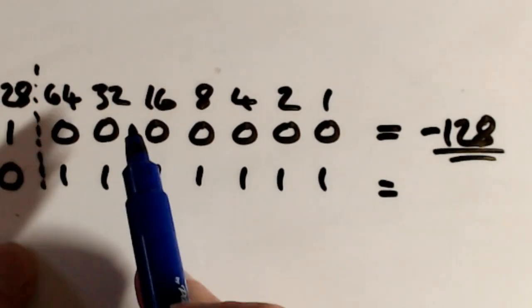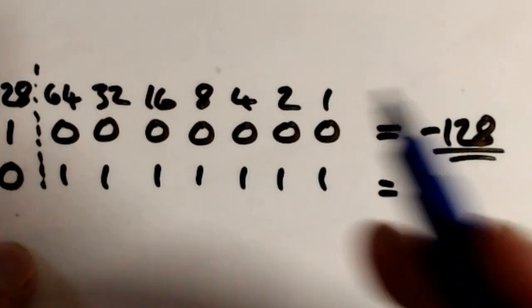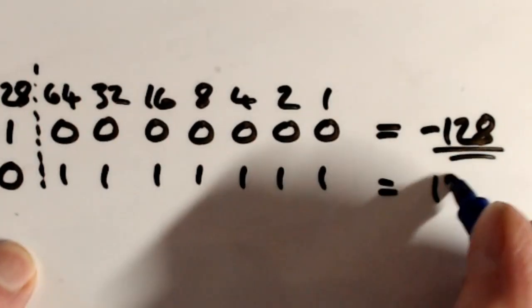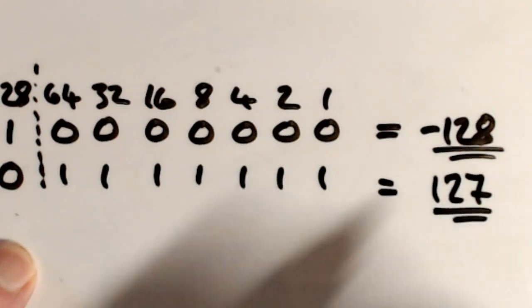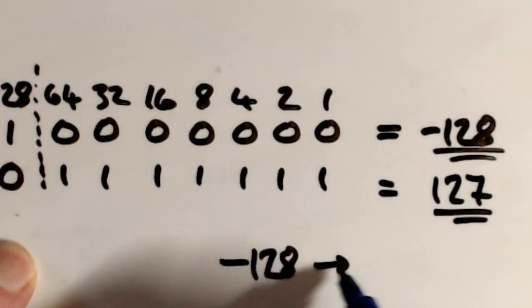If you add up 64, 32, 16, 8, 4, 2, and 1, that's 127. So the range is between minus 128 to 127.